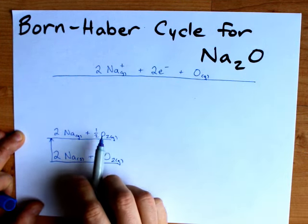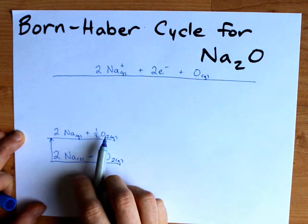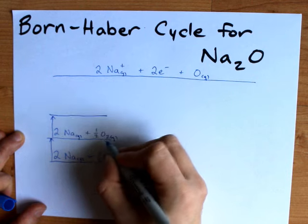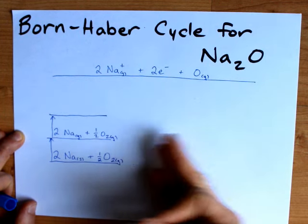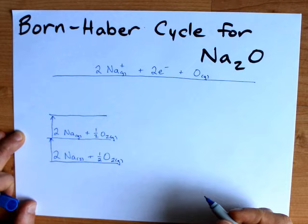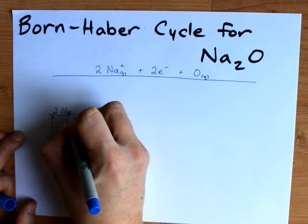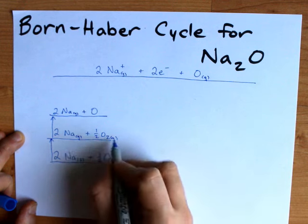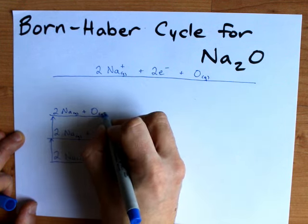Now I need to separate my O's from each other. That involves breaking apart an O2 bond. It's actually a double bond, but there is a bond enthalpy associated with it. My Na's will be untouched in that process, and I'm going to have my full mole of O now that I've done that.